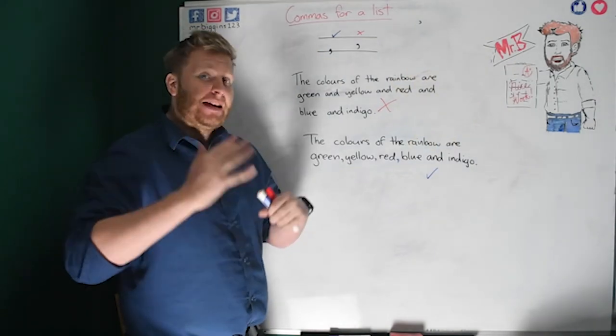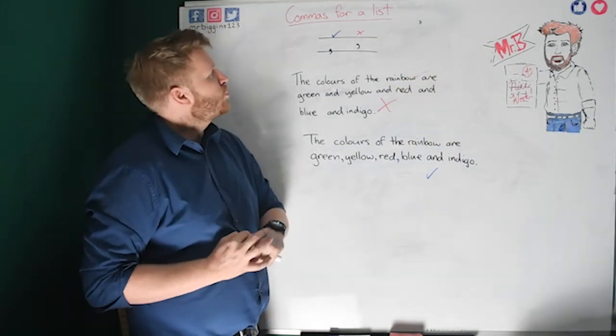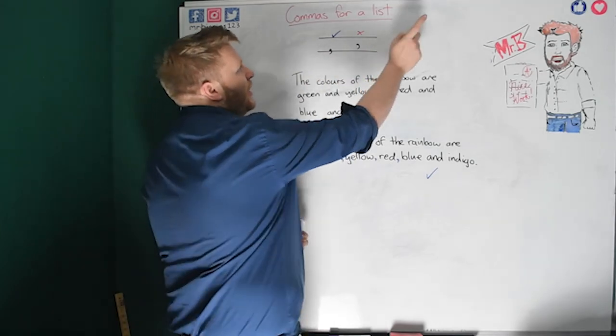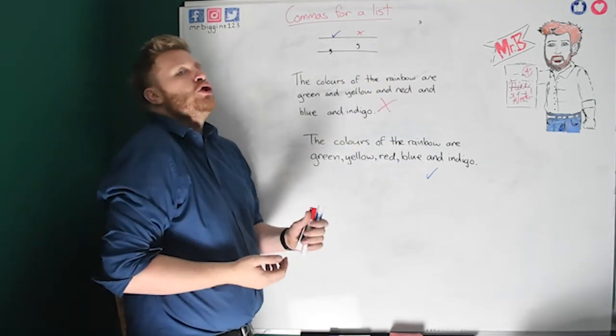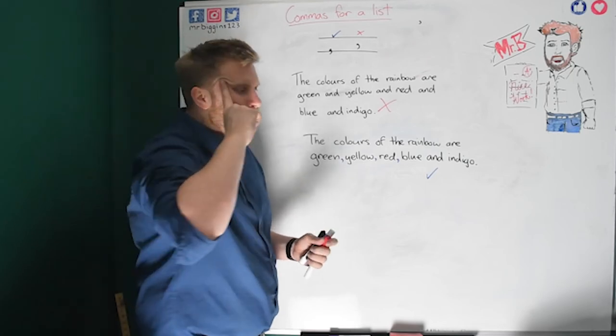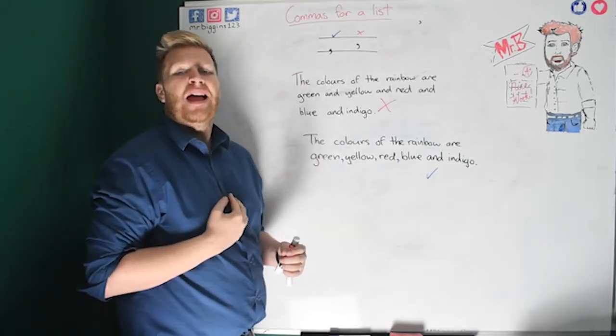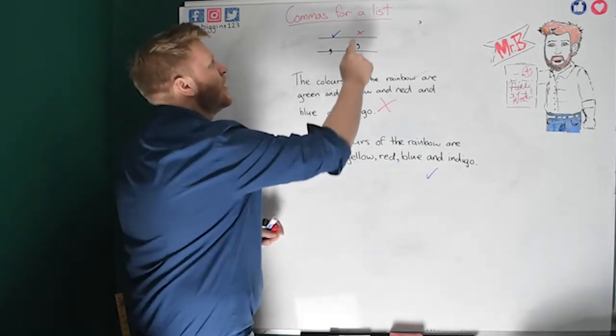Hi guys, Mr B here and in today's video we're going to be introduced to something called a comma that looks a little bit like this fella here. Now a comma is used for lots of different reasons but what we're going to do is we're going to work out what they look like today and then we're going to look at how we use them for something called a list.